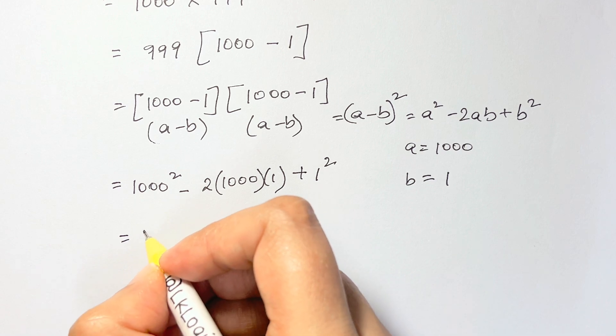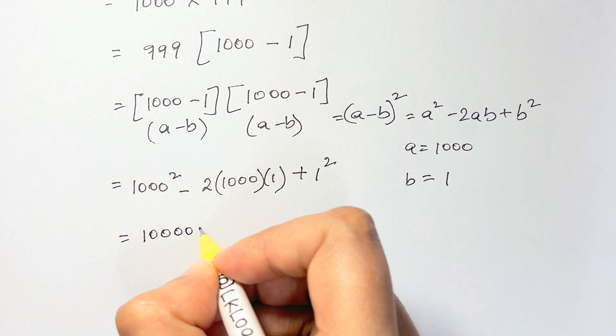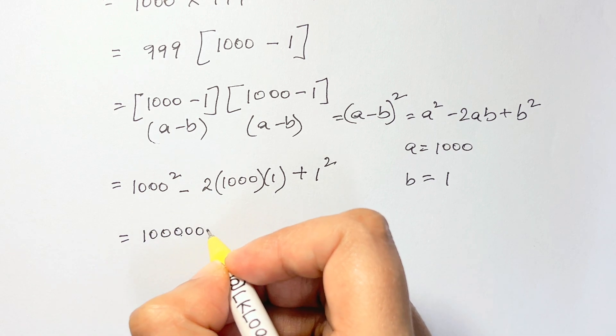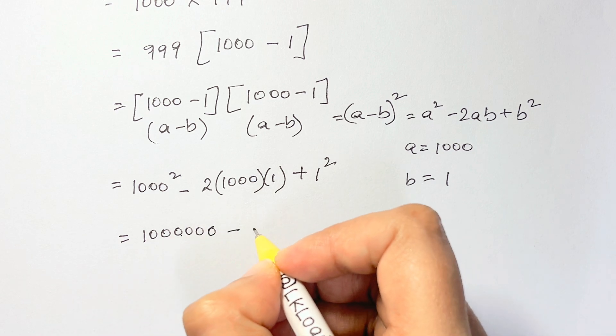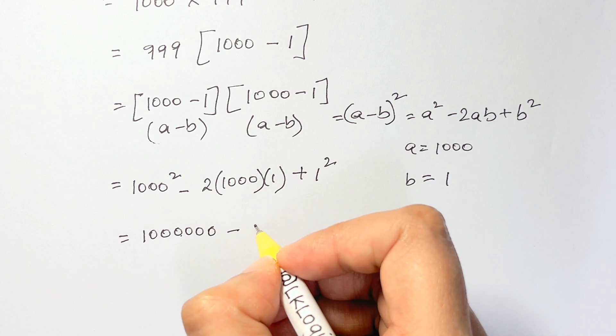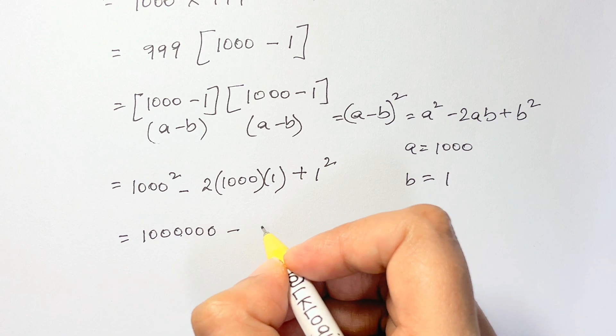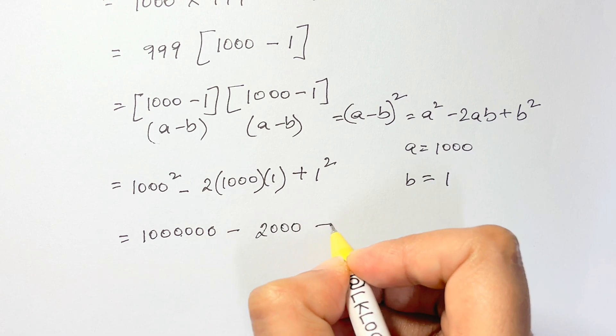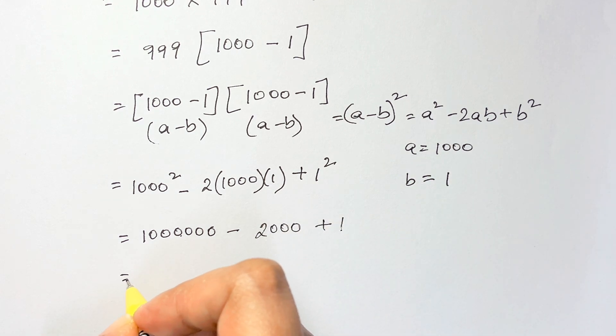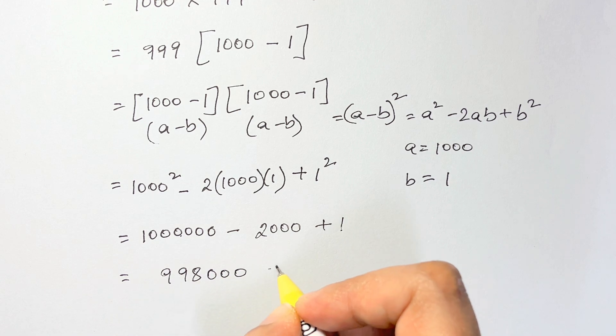1000 squared is 1,000,000. Minus 2 times 1000 is 2,000. Plus 1 squared is 1. So we have 1,000,000 minus 2,000 gives you 998,000 plus 1.